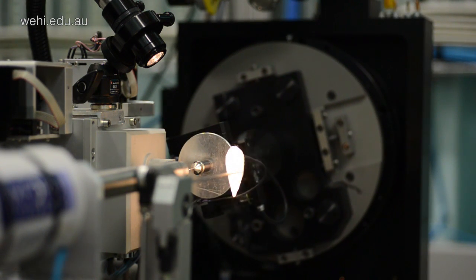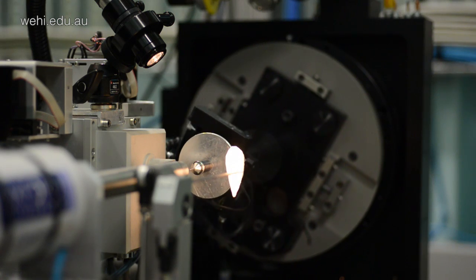At the synchrotron, we shoot it with a high-intensity X-ray beam. Once we shoot it with that X-ray beam, we're able to derive the way the protein looks on a three-dimensional atomic scale.